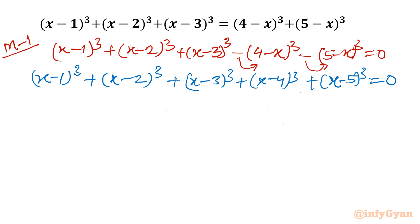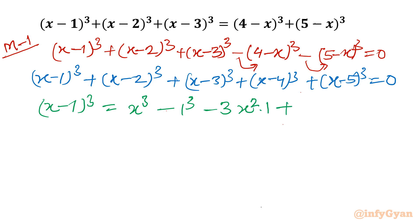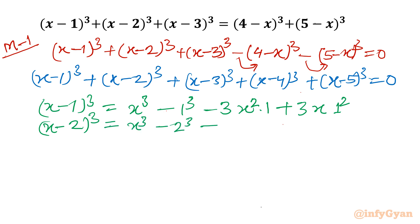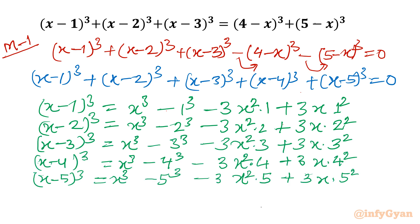Now I will write the formulas and expand each term. We know the formula: (a−b)³ = a³ − b³ − 3a²b + 3ab². I will apply this for each bracket — (x−1)³, (x−2)³, (x−3)³, (x−4)³, and (x−5)³. Expanding all five terms gives the complete LHS expression.